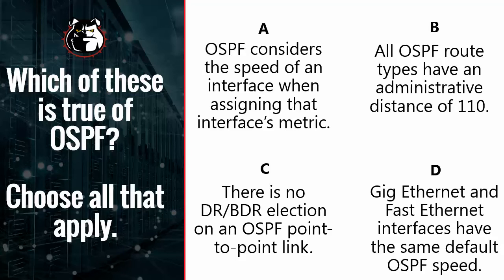Which of these is true of OSPF? Choose all that apply, if any. A: OSPF considers the speed of an interface when assigning that interface's metric. B: All OSPF route types have an administrative distance of 110. C: There is no DR-BDR election on an OSPF point-to-point link. D: GigEthernet and FastEthernet interfaces have the same default OSPF speed. If you want to take a little more time to think about it, feel free to hit the pause button.